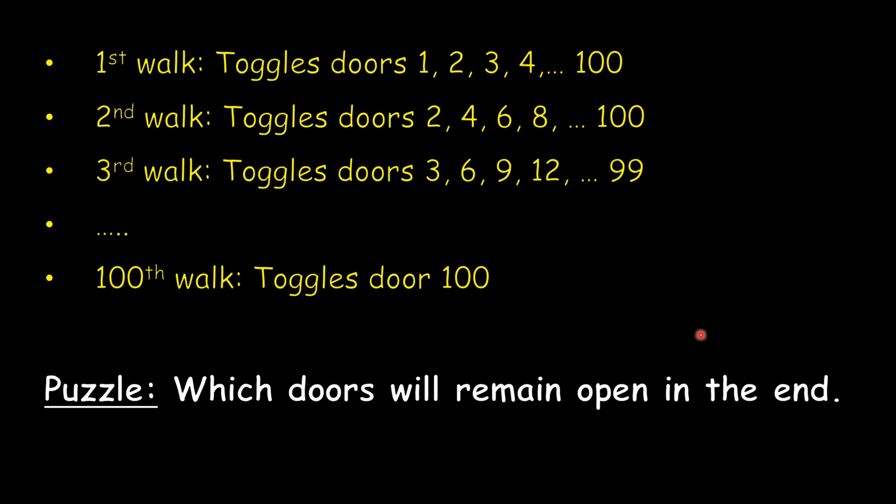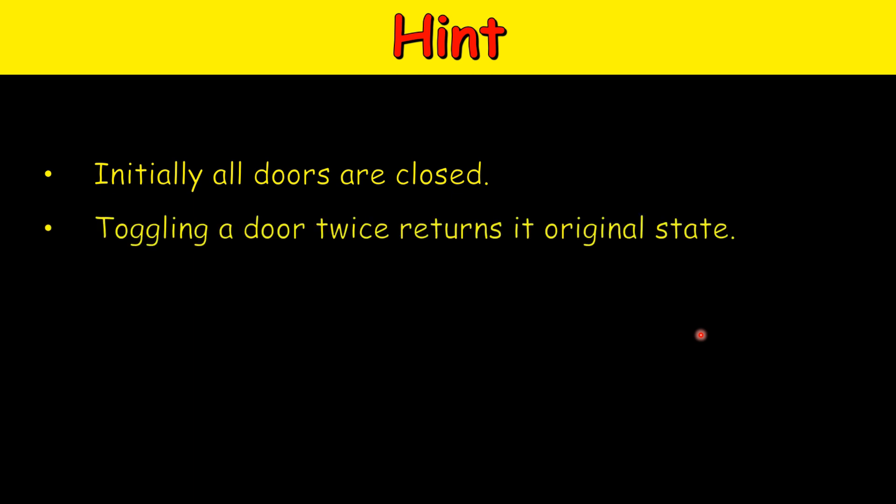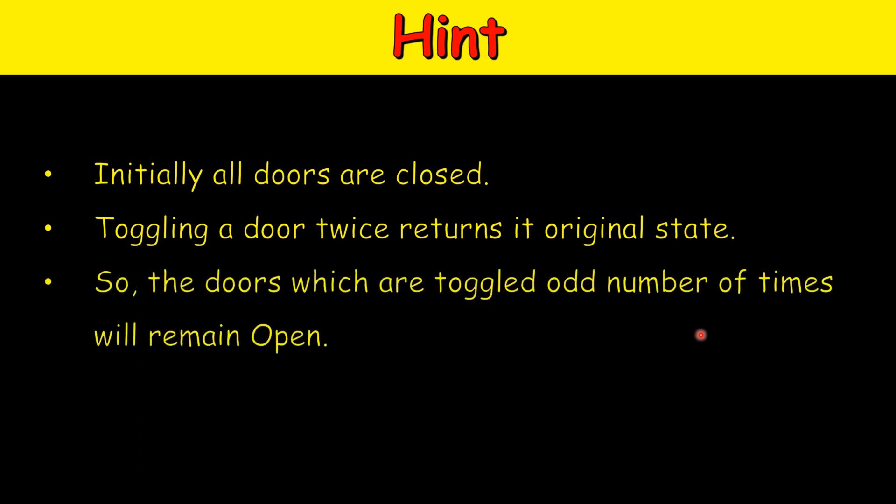Let's pause and think. Here's a hint: initially all the doors are closed. Also, toggling a door twice returns it to its original state — if it's closed, toggle it and it opens; toggle it again and it closes. So after two toggles it returns to the original state, and after four toggles as well. If the number of toggles is even, the door remains in the same state; if odd, the door changes its state.